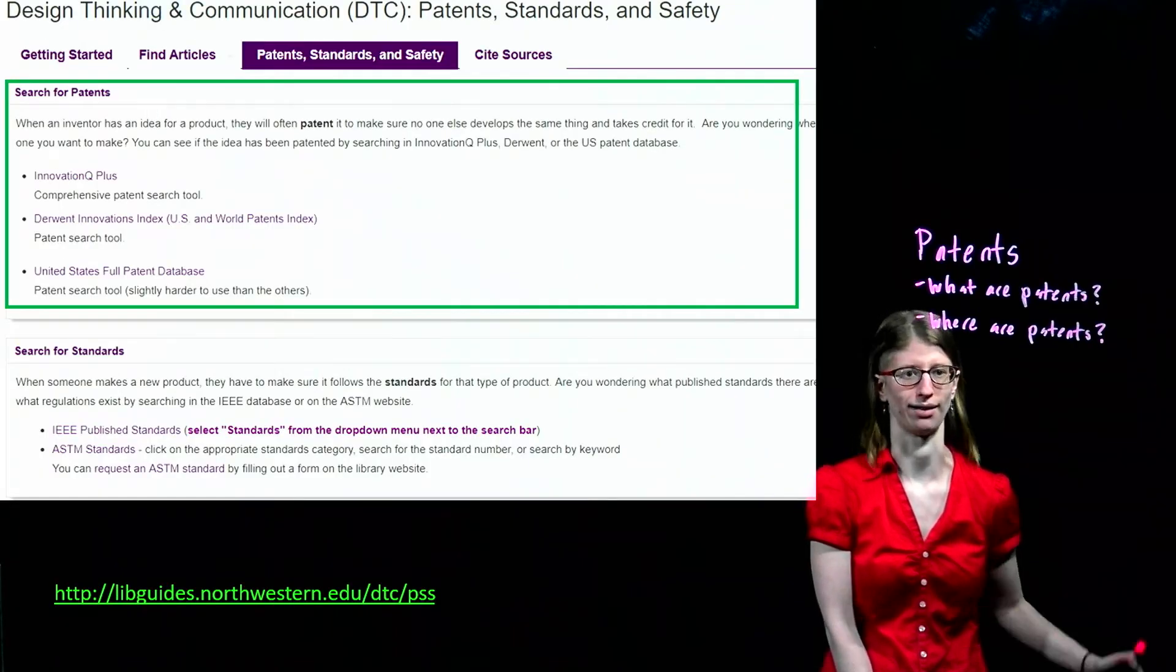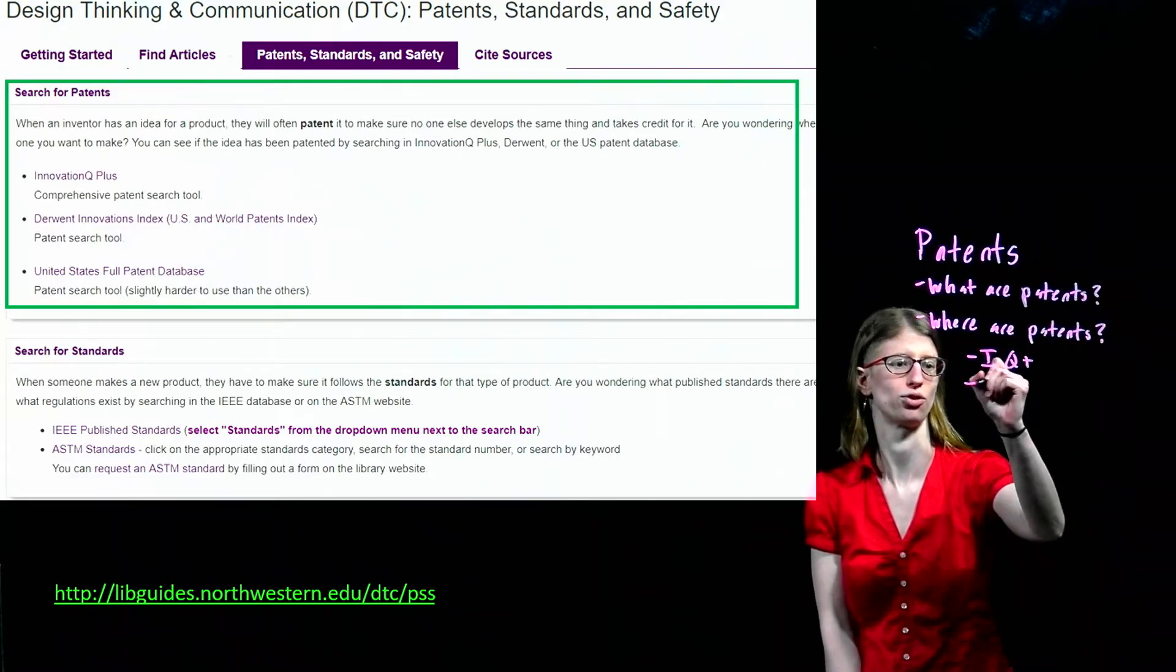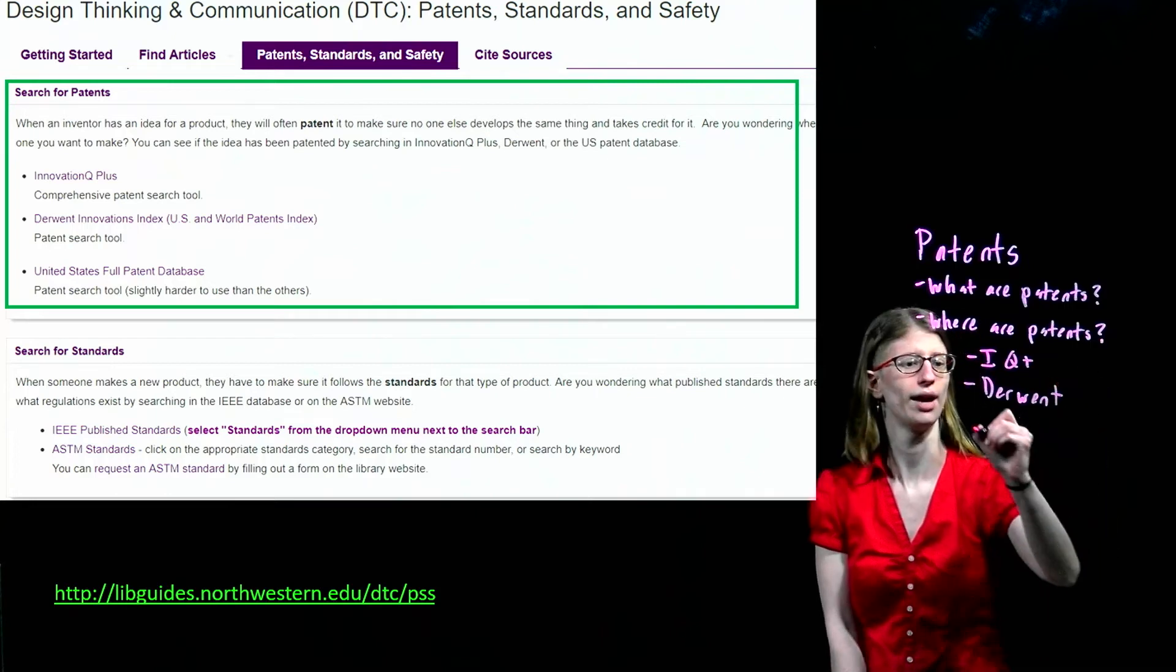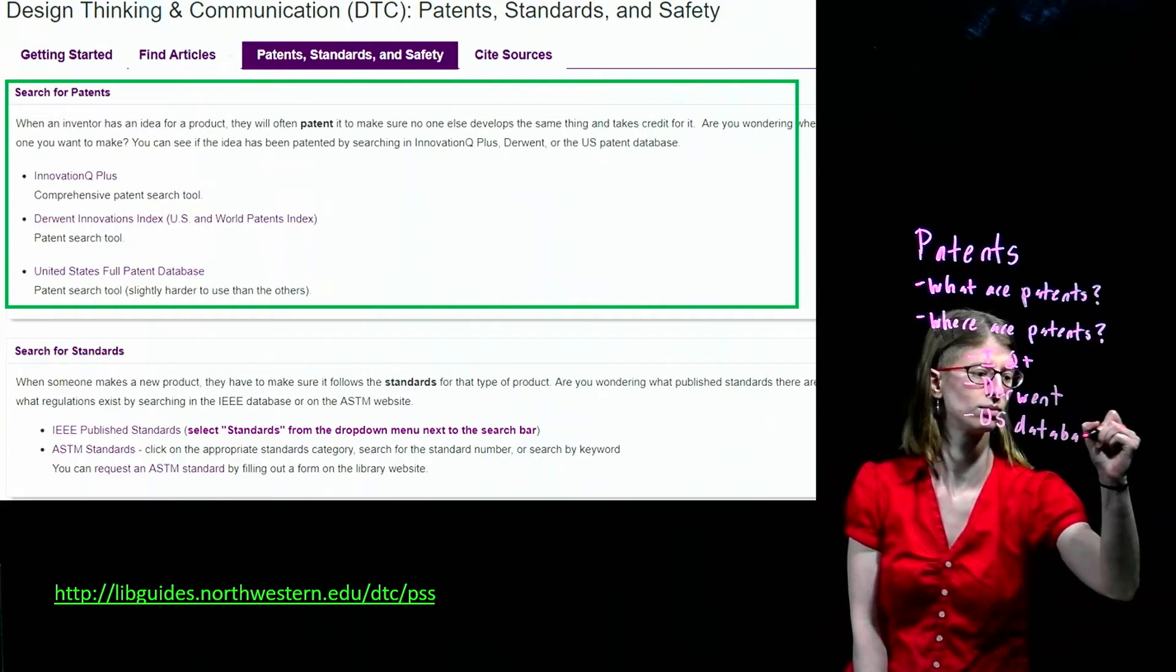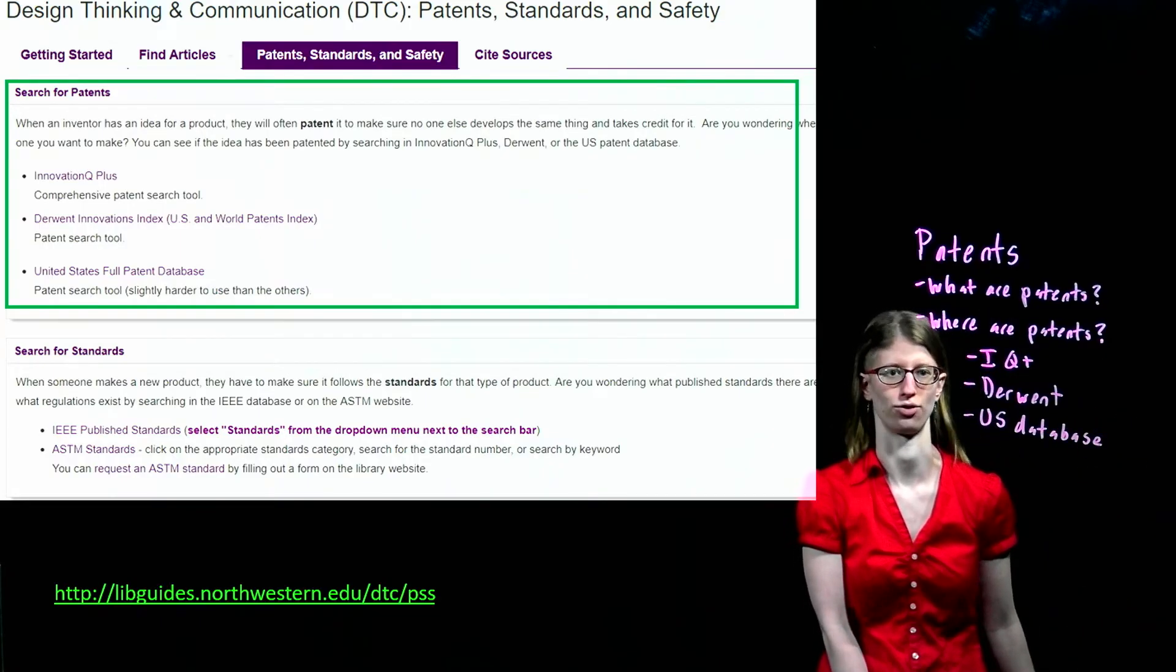Three databases that contain patents are Innovation Q+, Derwent, and the U.S. Patent Database. There are notes about all three databases and their coverage on the research guide.